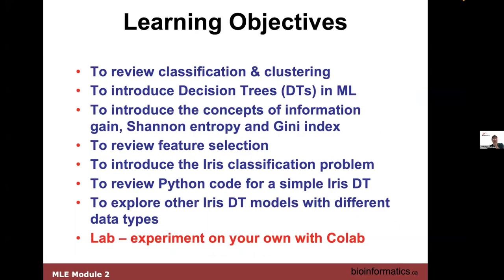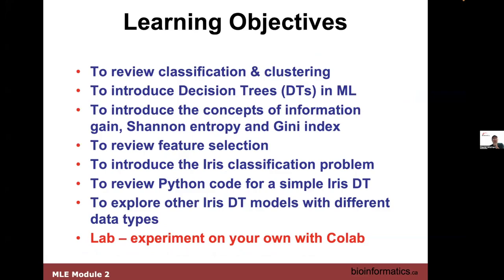So I'll just show the objectives again about what we're trying to do. We're looking at decision trees, talking about the Gini index, we'll do flower classification of irises, and we'll look at the code.